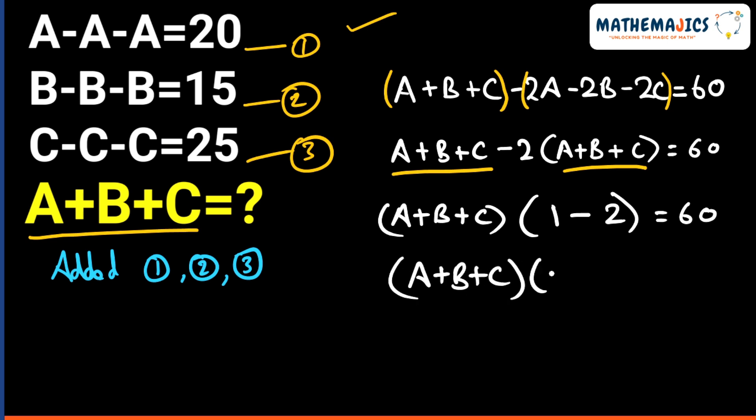Which will give us A plus B plus C times negative 1 is equal to 60. That means the value of A plus B plus C will turn out to be negative 60, and this we need to find out.